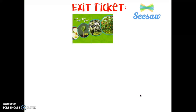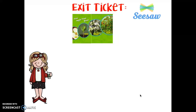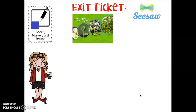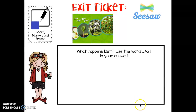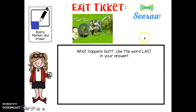Here's your exit ticket. Don't forget you need a board, a marker, and an eraser. On your board, tell me what happens last in the life cycle of an apple tree. Use the word 'last' in your answer. What happens last? Don't forget to take a picture of your board and seesaw it to your teacher. Super job today!